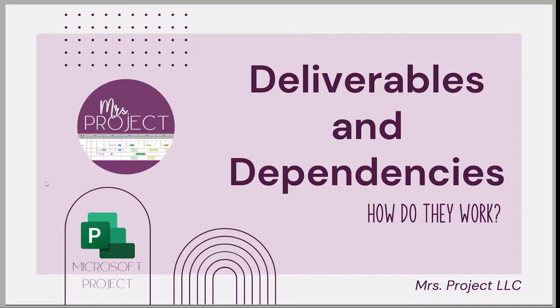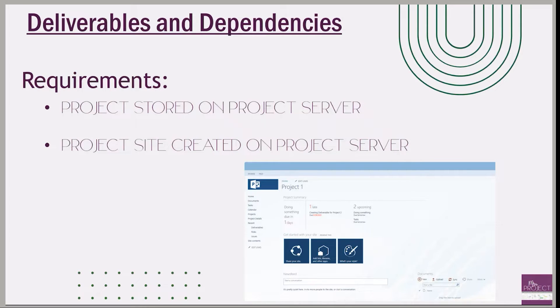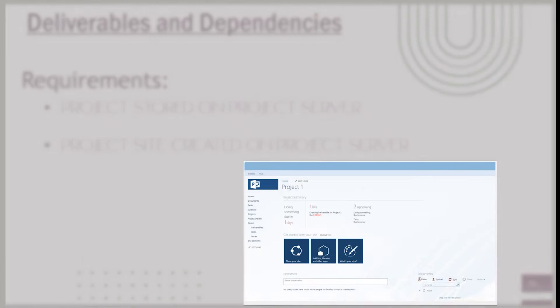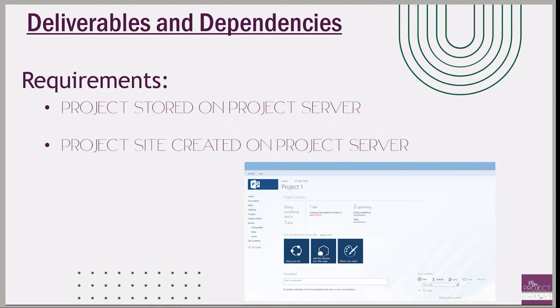First up, you want to make sure that your project is stored on project server. And if the option is still grayed out, you also want to make sure that the project site is created on project server. This is a glimpse of what your project site looks like, and you need to have both of these requirements in order for the dependencies and deliverables function to work.